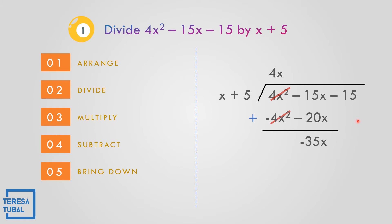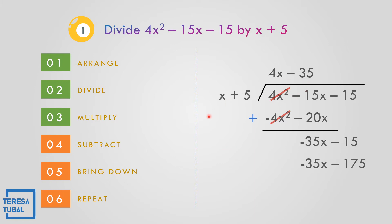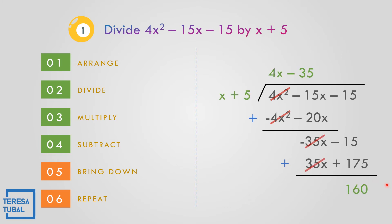After bringing down negative 15, divide again: negative 35x divided by x is negative 35. Multiply negative 35 by the divisor: negative 35 times x is negative 35x, and negative 35 times 5 is negative 175. Subtract — change the sign, so this becomes positive 35x and positive 175. Proceed to addition: 35 minus 35 is 0, and negative 15 plus 175 — subtract, copy the big sign — that is 160.